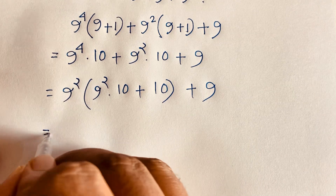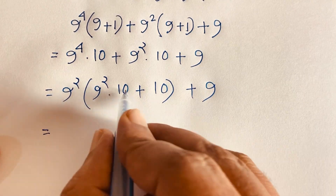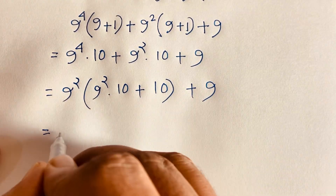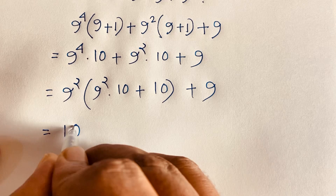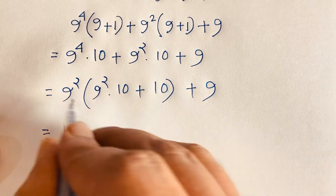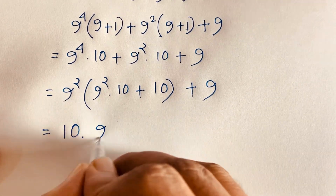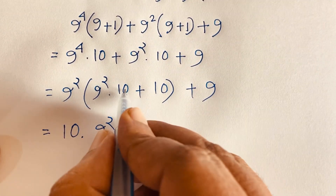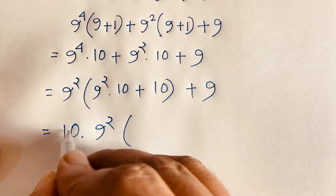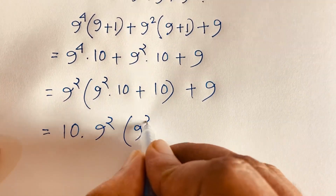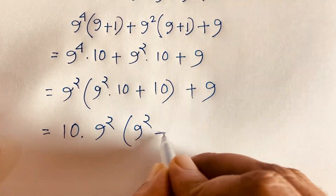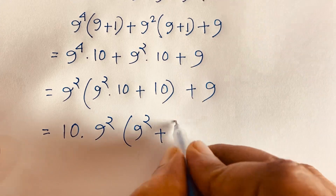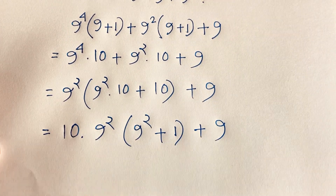Now 10 is common again, so I take 10 as common. Inside the bracket we have 9 to the power 2 plus 1, and the remaining term gives plus 9. So we have 9 to the power 2 times 10 times open bracket 9 to the power 2 plus 1 close bracket plus 9.